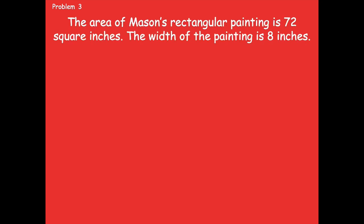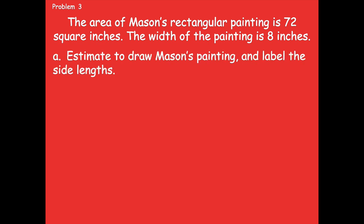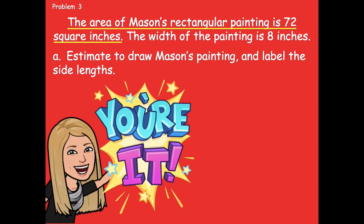Problem three says the area of Mason's rectangular painting is 72 square inches. The width of the painting is eight inches. Part A says estimate to draw Mason's painting and label the side lengths. It's telling you that the area is 72 square inches and the width is eight inches. You need to figure out what the length is. Think about area equals length times width — use that to help you solve for the side length to make your drawing. Pause the video, create your drawing, label your side lengths, and then click play when you're ready to go over it together.